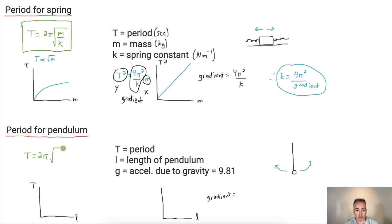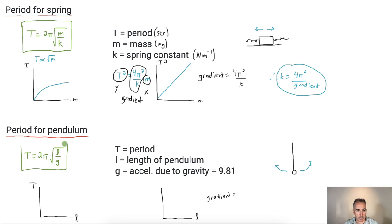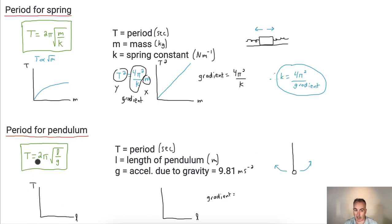The units here: period is in seconds, L is the length of the pendulum in meters, and g is acceleration due to gravity — 9.81 meters per second squared. If we graphed T versus L, we'd again get a square-root shaped curve, which isn't very helpful for finding a gradient. So instead we should square everything to linearize it.